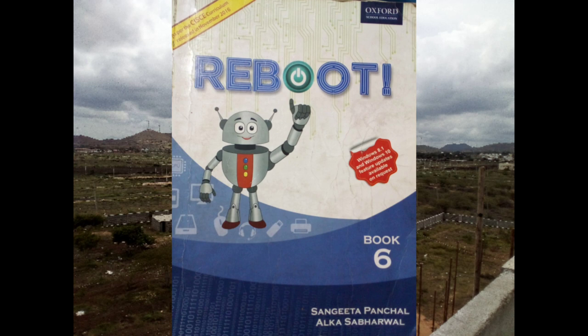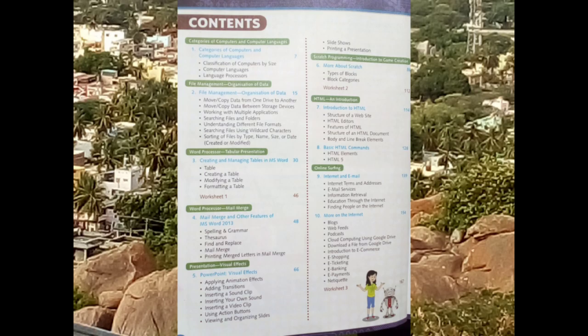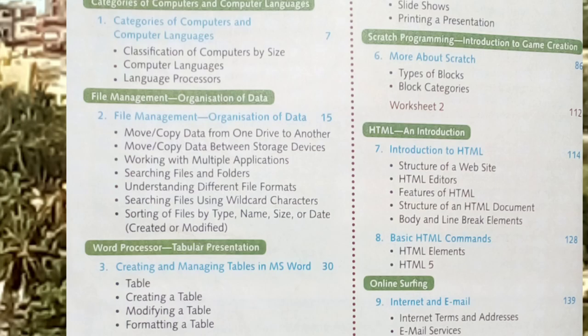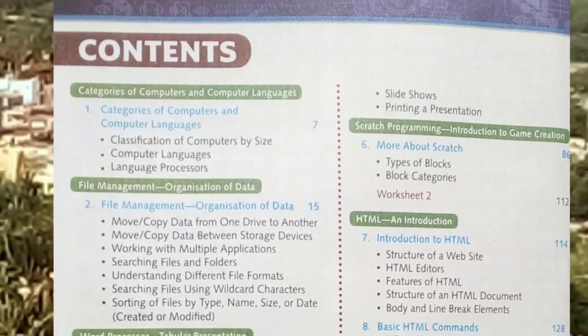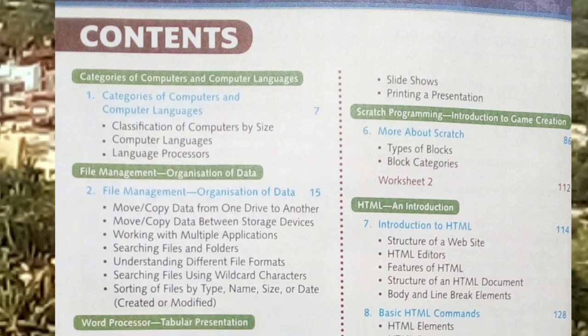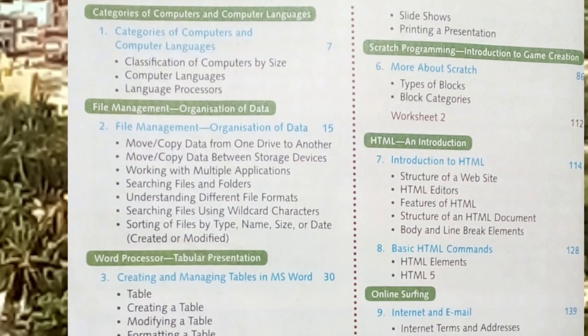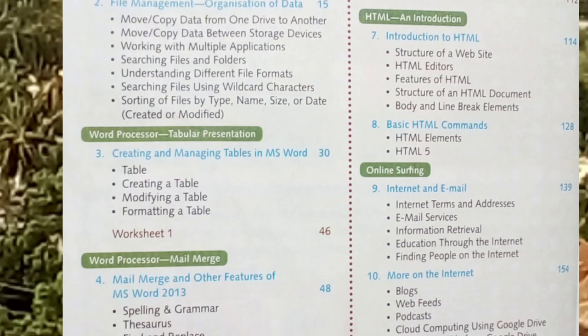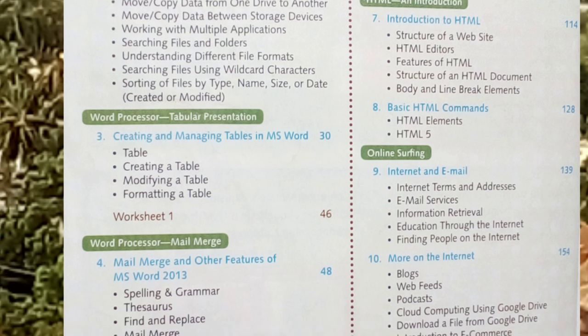We will be familiar with our textbook, the Oxford textbook. It is very simple and attractive. We will compare the syllabus and the content in the textbook. If you see the textbook, the categories of computers chapter is there in the reduced syllabus. File management is also there, and word processor is there.